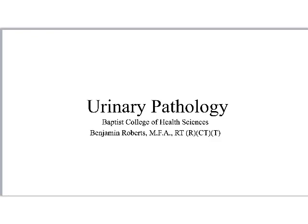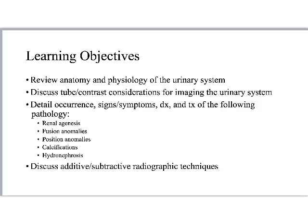We're going to talk about the urinary system finally. The learning objectives identified for this are: review the anatomy and physiology of the urinary system, discuss tubes, and contrast considerations for imaging the urinary system. We're going to talk about the occurrence, signs, symptoms, diagnosis, and treatment of renal agenesis, fusion anomalies, position anomalies, calcifications, and hydronephrosis. A lot of this is congenital stuff, and then we'll discuss additive and subtractive radiographic techniques.